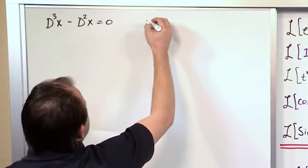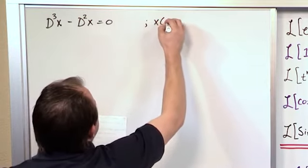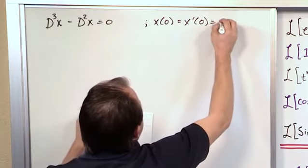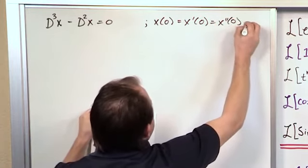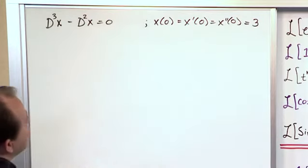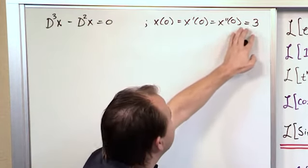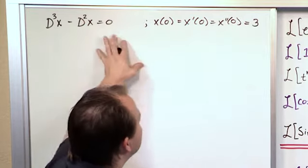The initial conditions that are given in the problem statement is x(0) is equal to x'(0) is equal to x''(0), which is equal to three. So basically at time zero, the function is equal to three, its first derivative is equal to three, and its second derivative is equal to three, all at time zero.